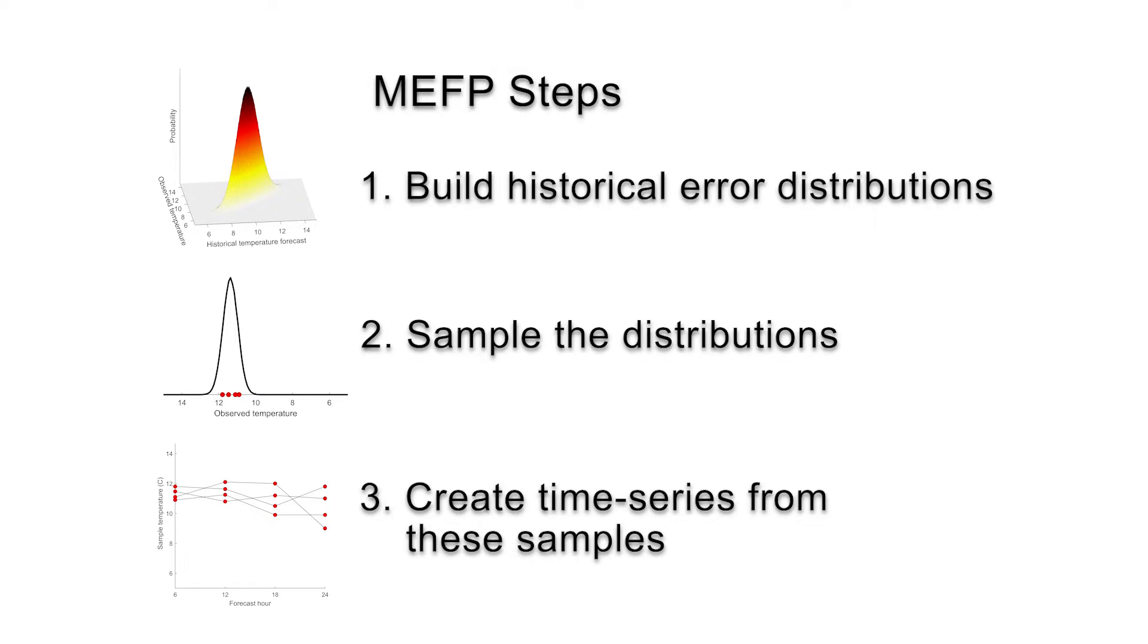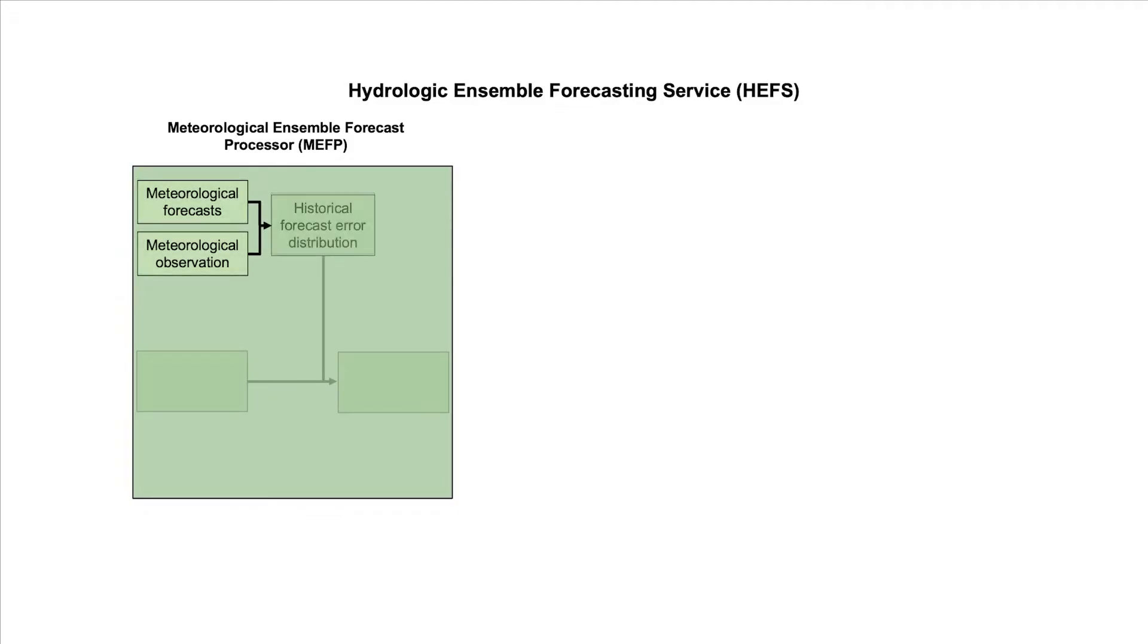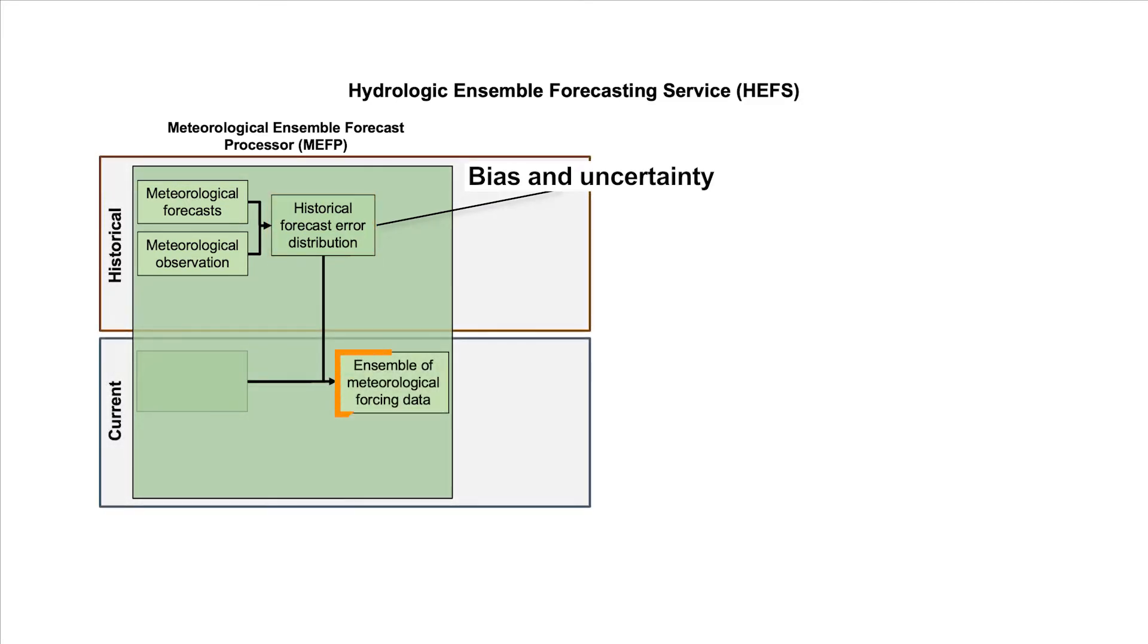In order to explain these steps, let's walk through a simplified example using temperature. In this first step, we need to quantify the bias and uncertainty in past forecasts so that later we can account for these in the current forecast.